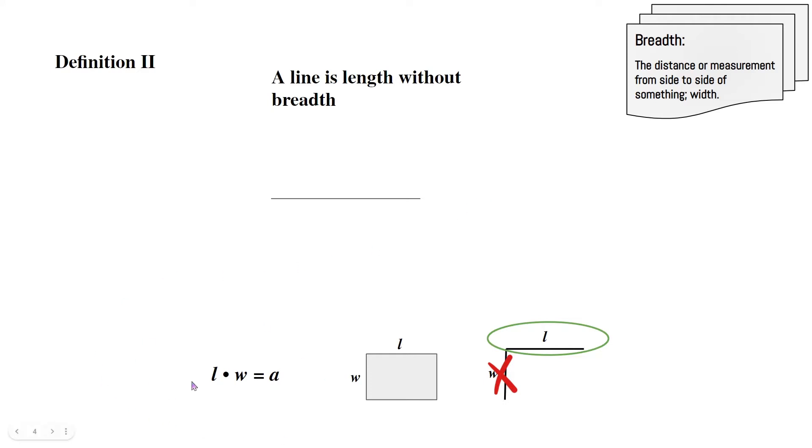Now over here, we know that the area of a rectangle is length times width. And as you can see, there's length and width. Now what it's saying is basically a line is the length without the width. So if we take away the width, we're left with the length, and that is a line.